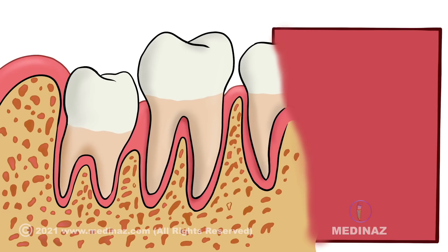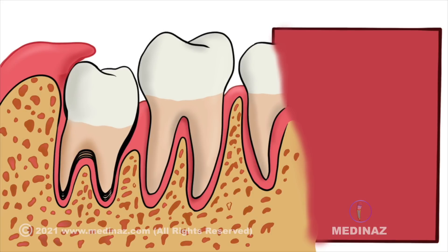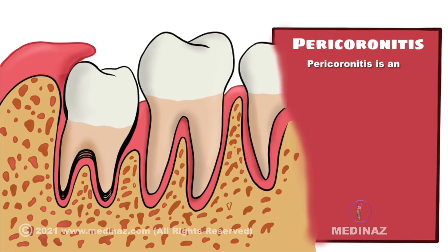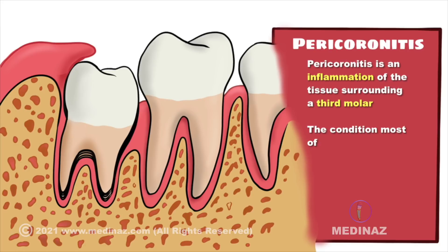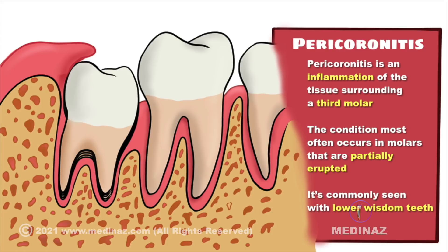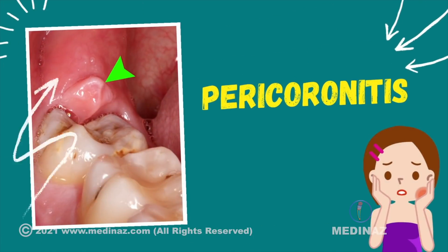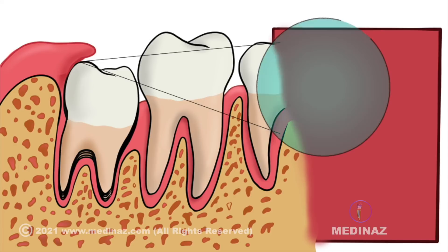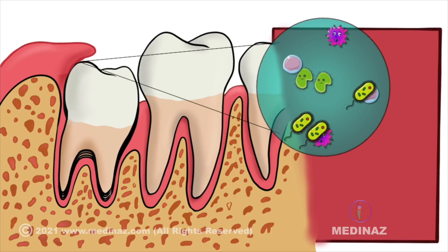One of the most common reasons is pericoronitis. Pericoronitis is an inflammation of the tissue surrounding a third molar. This condition most often occurs in molars that are partially erupted or are not fully visible. It is commonly seen with the lower third molar. Most people with pericoronitis have a pericoronal flap or gum tissue partially covering the crown of the erupting tooth, as shown here. This is an ideal place for food accumulation, which gives cavity-causing bacteria a place to grow.